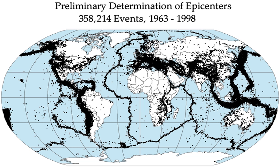Subsequent scales have retained a key feature where each unit represents a 10-fold difference in the amplitude of ground shaking and a 32-fold difference in energy. Although the mass media commonly reports earthquake magnitudes as the Richter scale, standard practice by most seismological authorities is to express an earthquake's strength on the moment magnitude scale, which is based on the actual energy released by an earthquake.